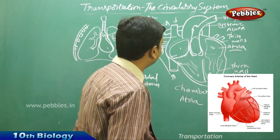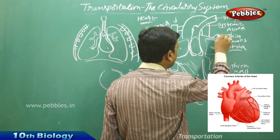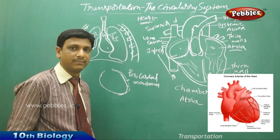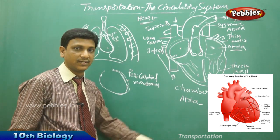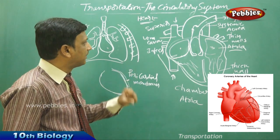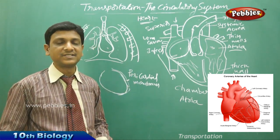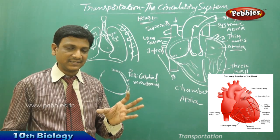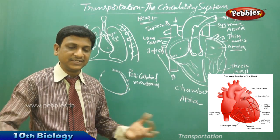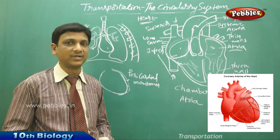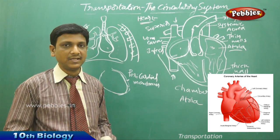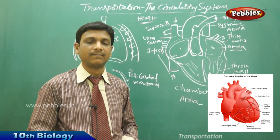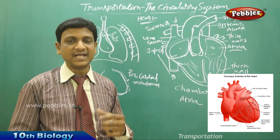We also find pulmonary veins, which bring oxygenated blood from the lungs back to the heart. If you observe the major differences between arteries and veins: arteries are very rigid because they carry blood with high pressure, as the blood must be supplied to various parts of the body. Arteries usually carry oxygenated blood, and their chief function is to carry oxygenated blood. Veins are less rigid and carry deoxygenated blood.